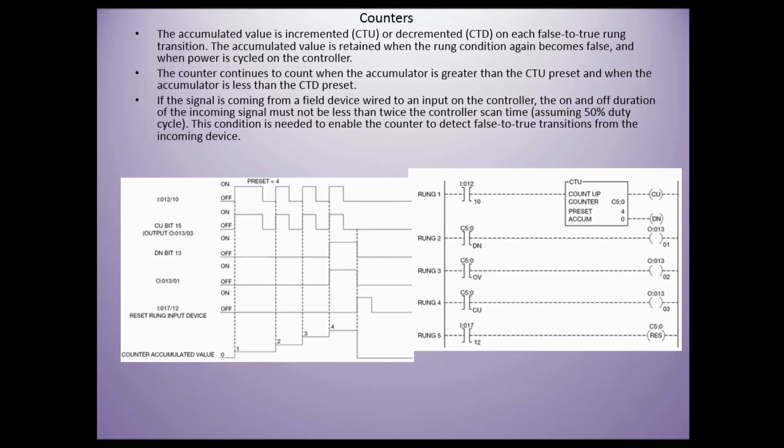The cumulative value is retained when the rung condition becomes false and when the power is cycled on the controller. That accumulated value will be retained in that counter. The counter continues to count when the accumulated is greater than the preset and when the accumulator is less than the preset in the CTD.